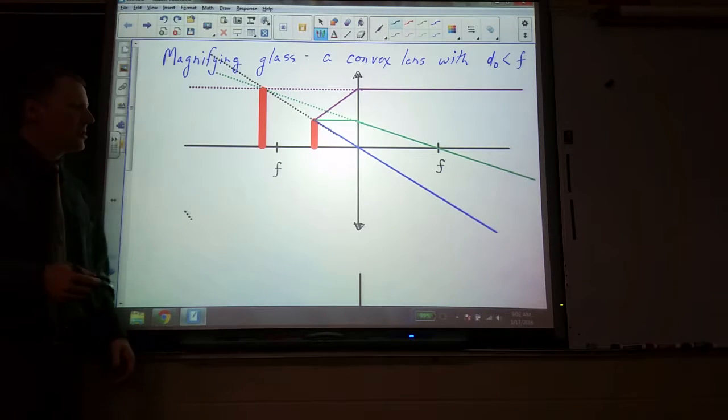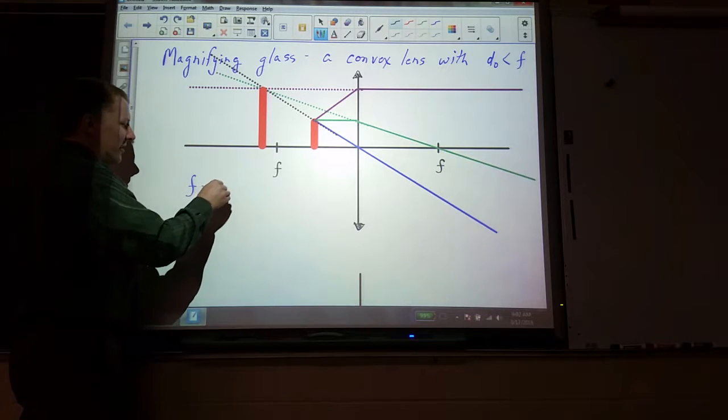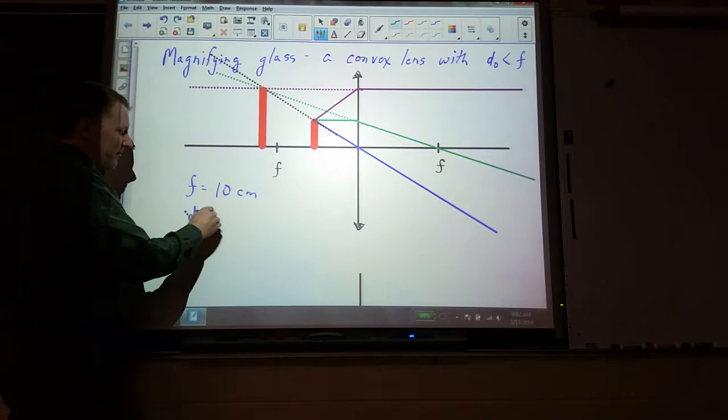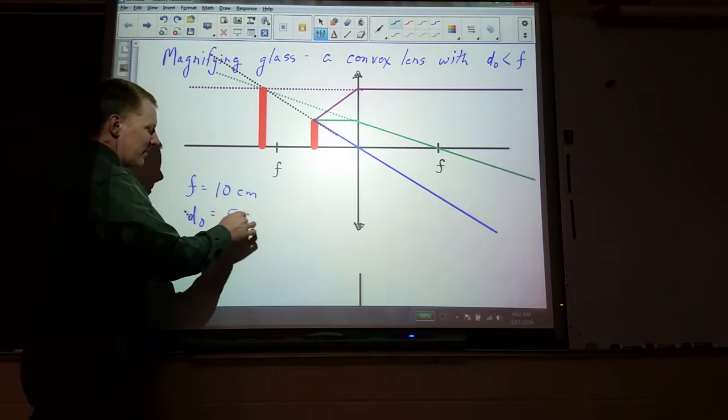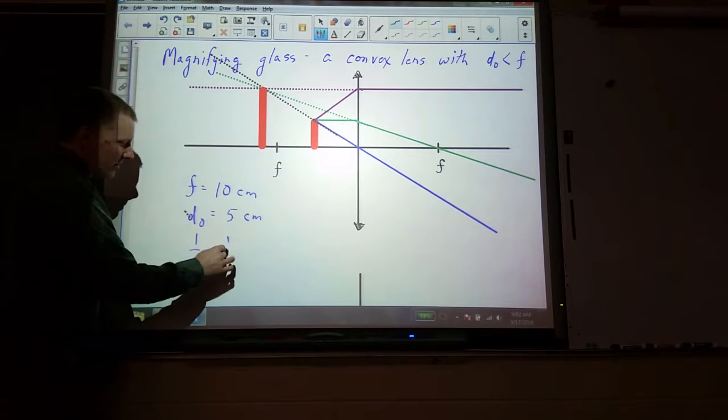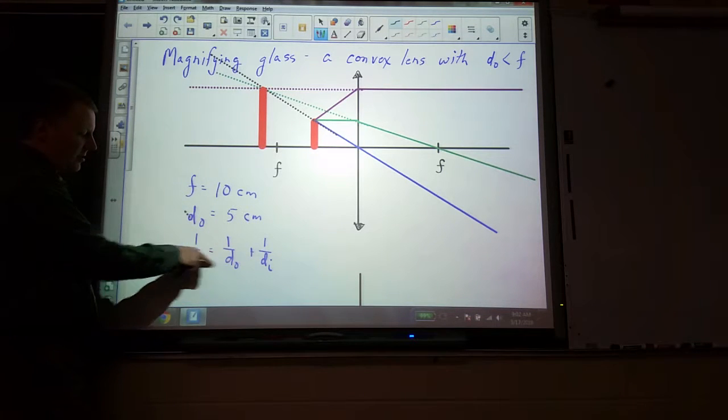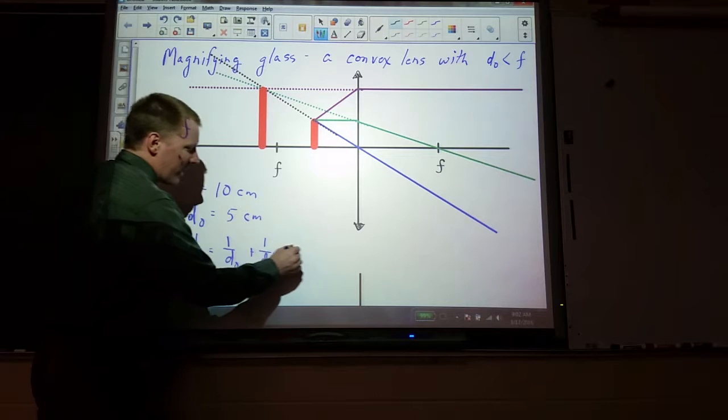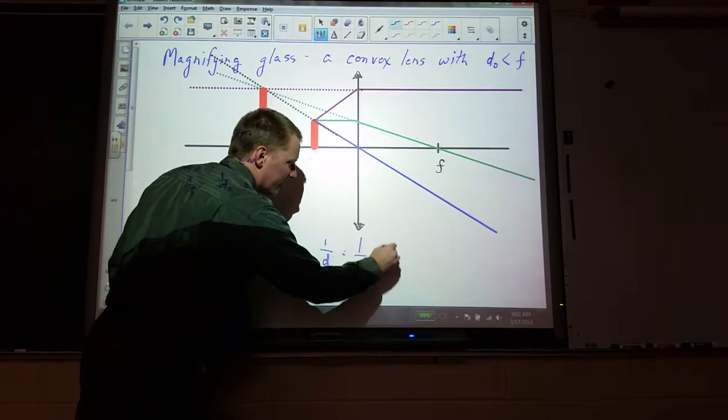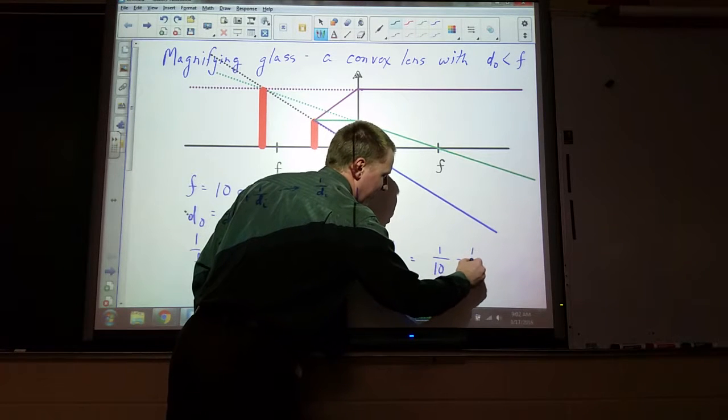If we actually do the calculation, which we might as well do now too for practice, let's say that focal length, I'm going to keep these fairly simple, 10 centimeters. And let's say that the object distance is less than that, so we'll say 5 centimeters. Let's find where the image forms. We've got our lens equation, 1 over F equals 1 over DO plus 1 over DI.